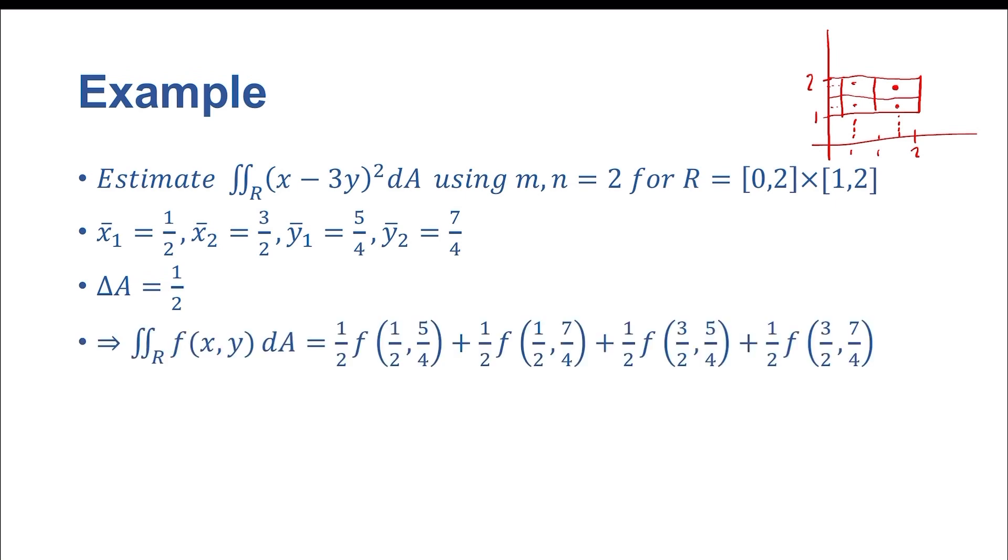So when I plug in for the midpoint rule formula, we get that the double integral of f of x, y, dA is equal to 1 half f of 1 half 5 fourths, plus 1 half f of 1 half 7 fourths, plus 1 half f of 3 halves 5 fourths, plus 1 half f of 3 halves 7 fourths.